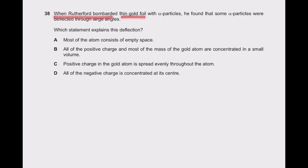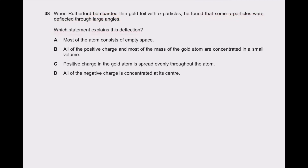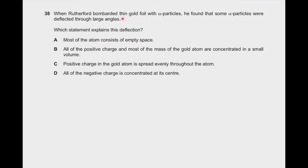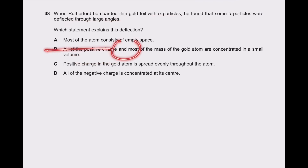Question 38: when Rutherford bombarded thin gold foil with alpha particles, some were deflected through large angles. The statement that explains this: all of the positive charge and most of the mass of the gold atom are concentrated in a small volume — the nucleus. That is why alpha particles directed toward the nucleus are deflected through large angles. Option B is the right answer. The positive charge is not spread evenly; negative charge is not at the center.